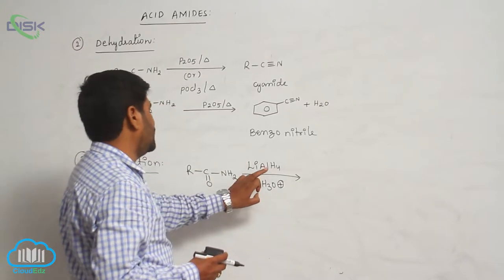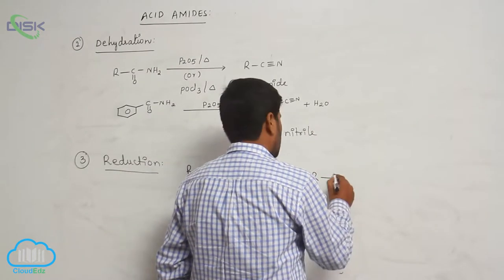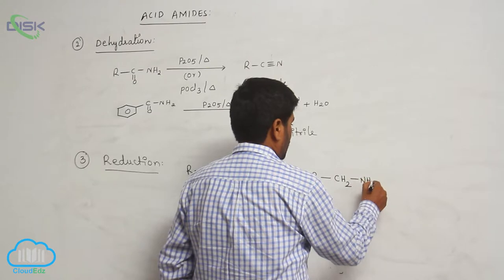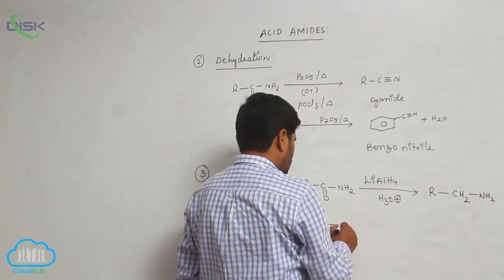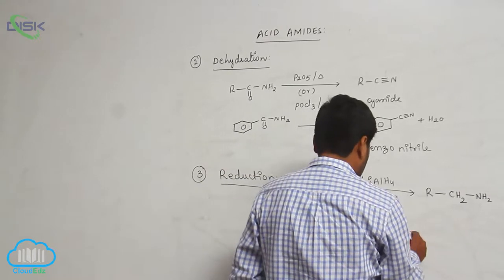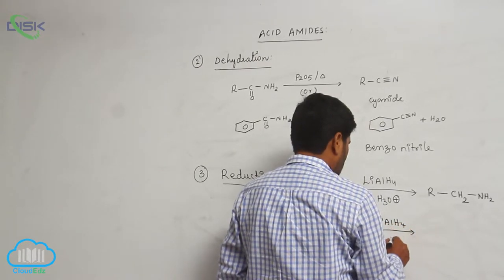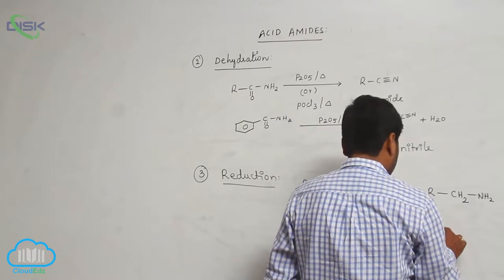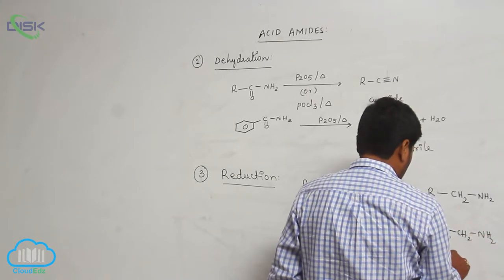Amides are reduced with lithium aluminum hydride to form RCH2NH2 — a primary amine. For example, acetamide reacts with lithium aluminum hydride to form CH3CH2NH2, which is known as ethylamine.